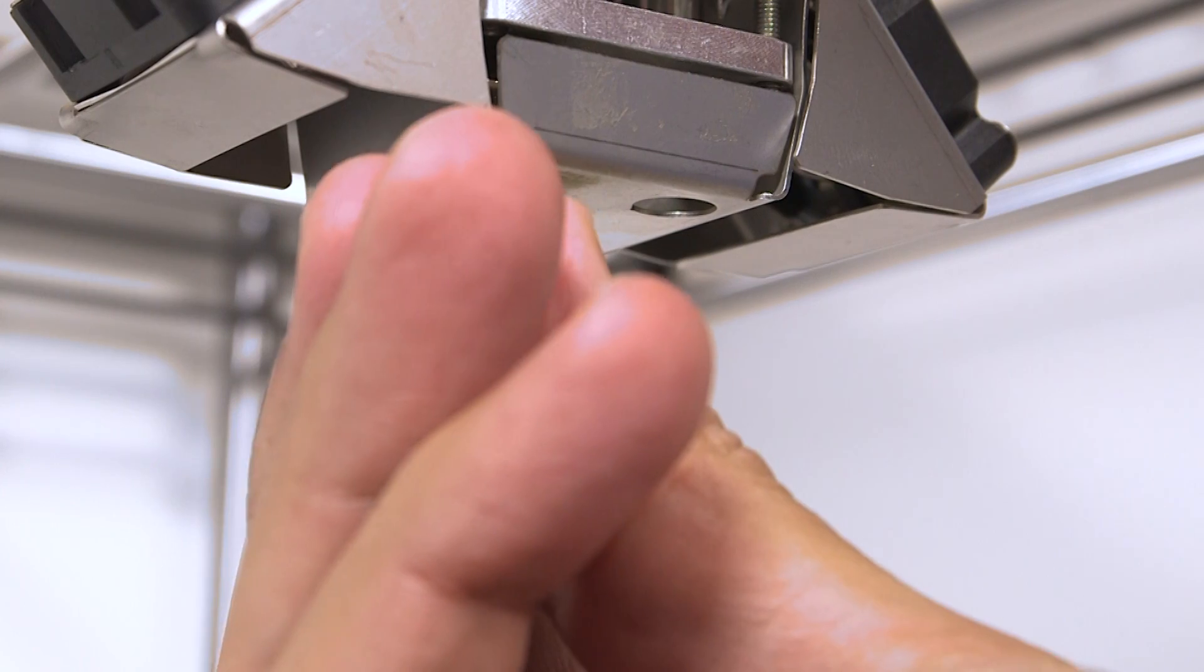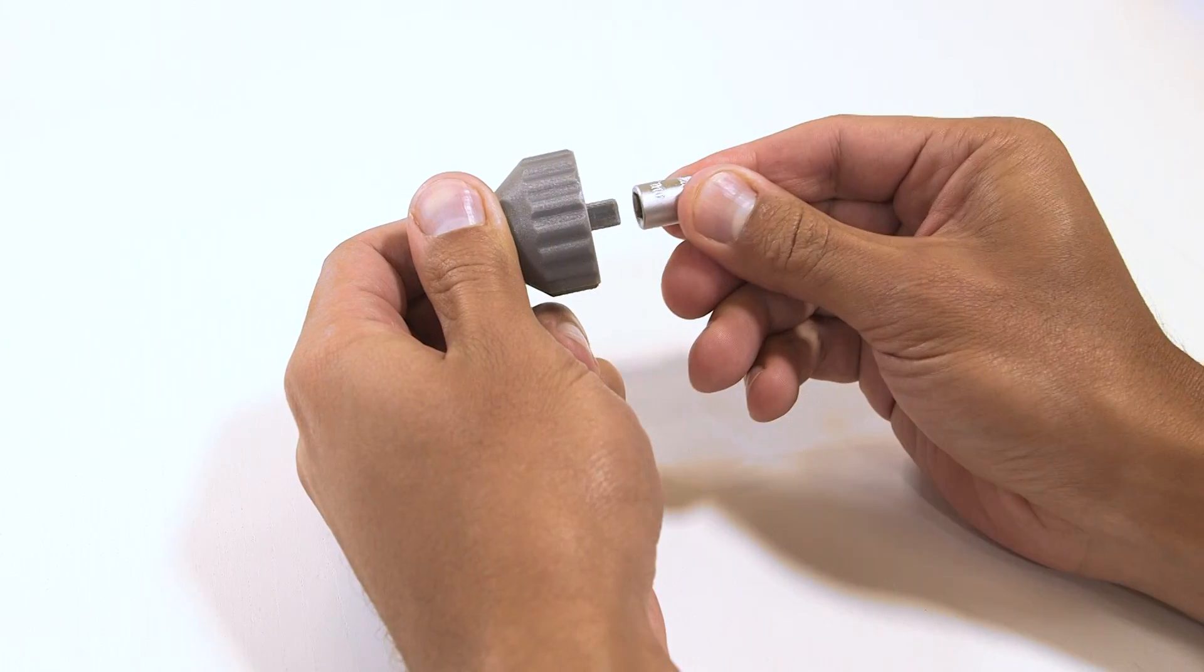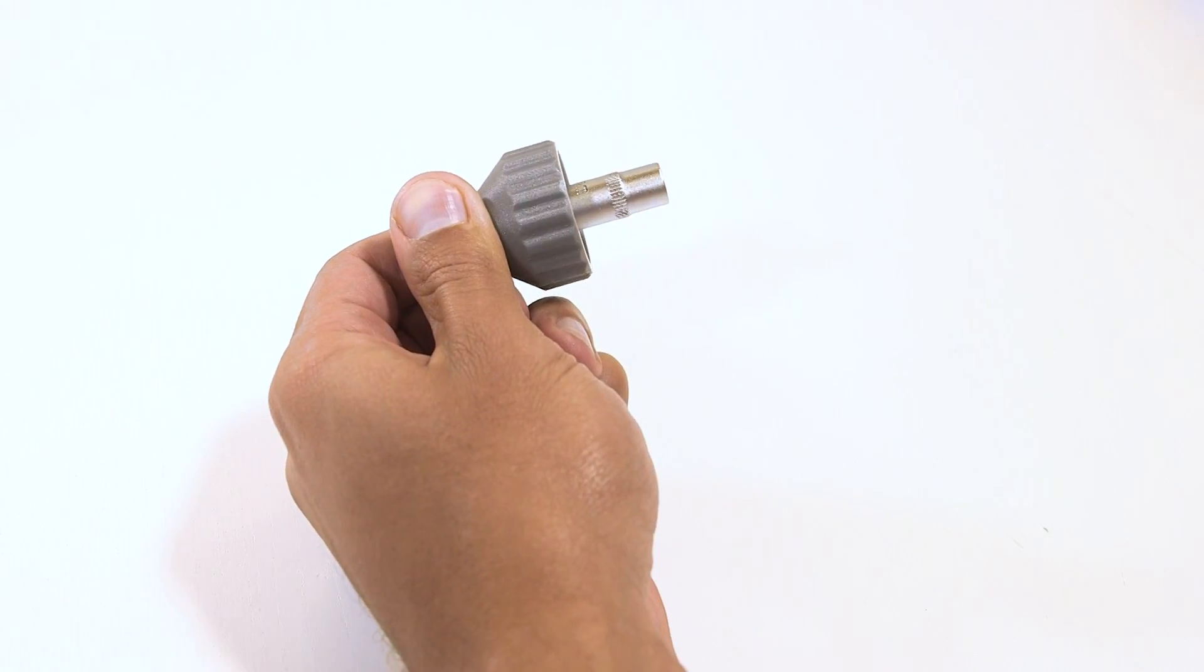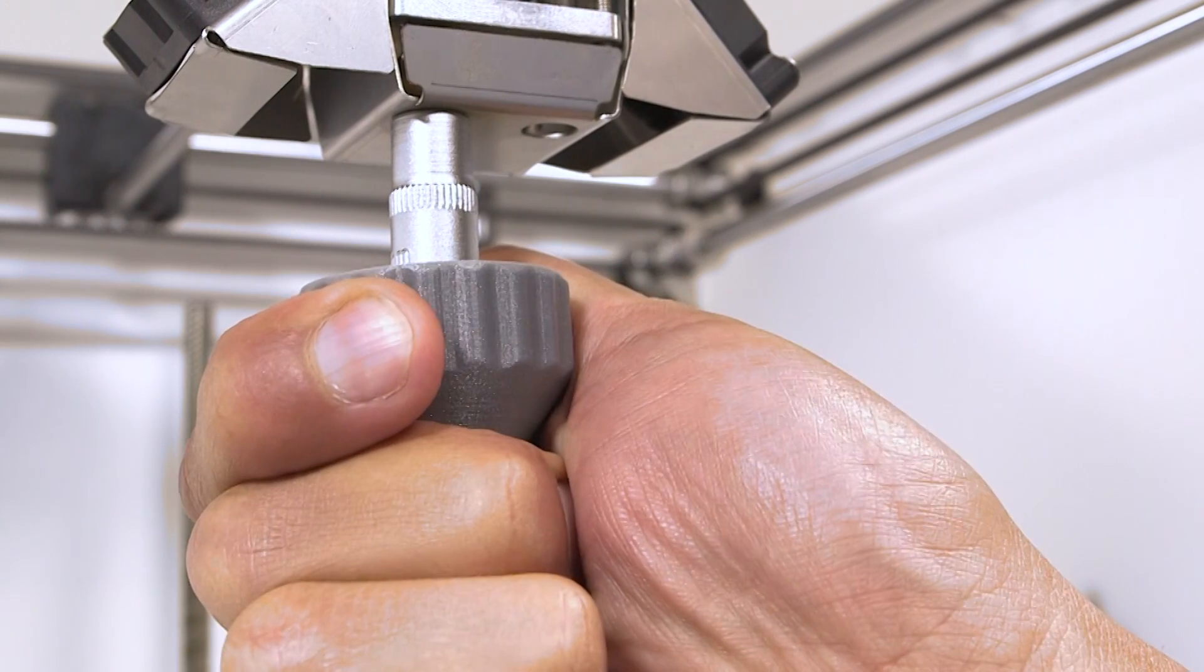Now select your desired nozzle and screw it into the Olsen Block by hand until tight. Use the socket to tighten it completely. If you've printed it, use the torque wrench with the socket to prevent over-tightening.